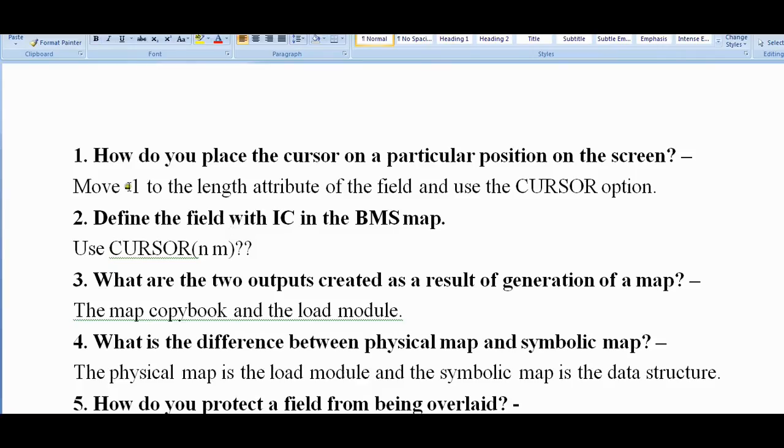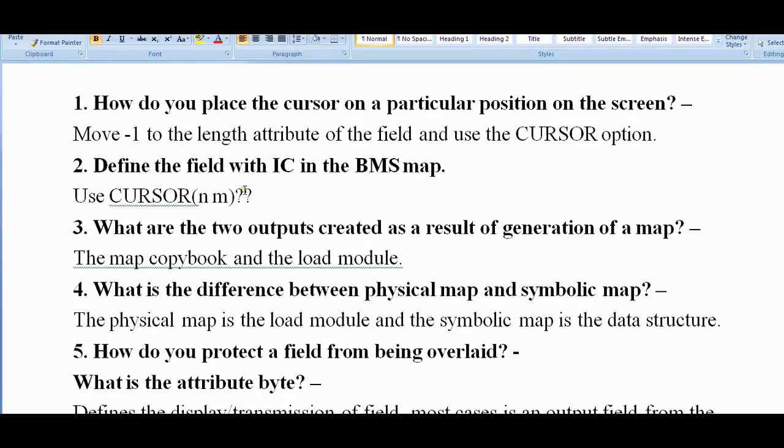The first question is how do you place the cursor on a particular position on the screen? Move minus one to the length attribute of the field and use the CURSOR option. There are different ways of positioning the cursor - through your program or while coding a map. Define the field with IC in the BMS map. Normally we use CURSOR(n,m).